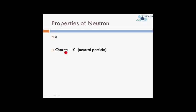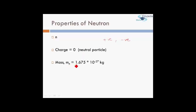Properties of the neutron include that it is represented by the small letter 'n' and it has no charge — it is a neutral particle. So now we know of three subatomic particles: protons, which are positively charged; electrons, which are negatively charged; and neutrons, which are neutral and have no charge.